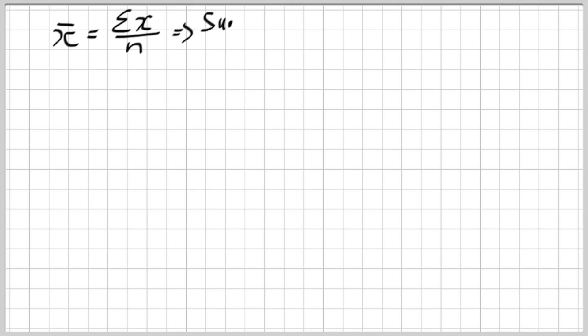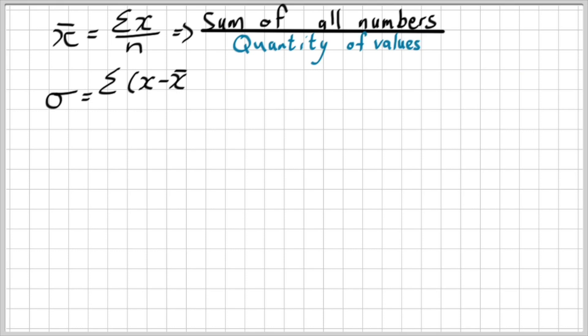Remember that the mean is simply the sum total of all the numbers over the quantity of numbers, or the quantity of values. Now standard deviation has got that formula—kind of a big formula—and we have to understand certain parts of it.